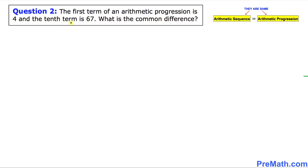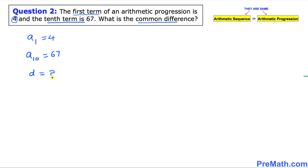Let's get started with the first question. The first term of an arithmetic progression is 4, and the 10th term is 67. What is the common difference? Remember, arithmetic sequence and arithmetic progression are exactly the same thing. So our first term a sub 1 equals 4, the 10th term a sub 10 equals 67, and we need to find d.